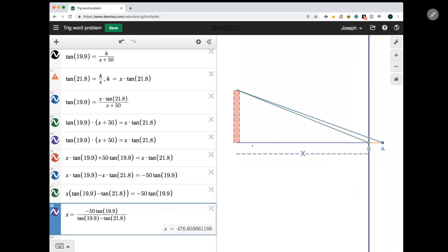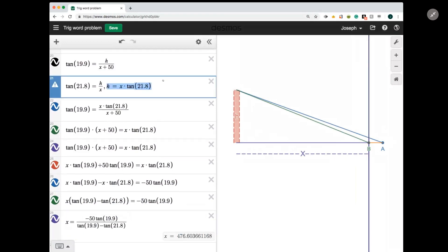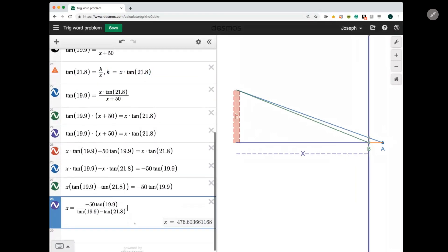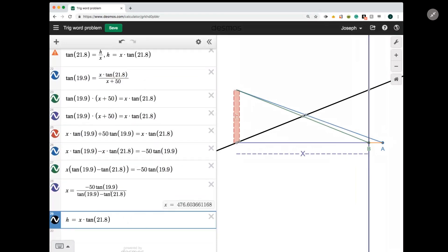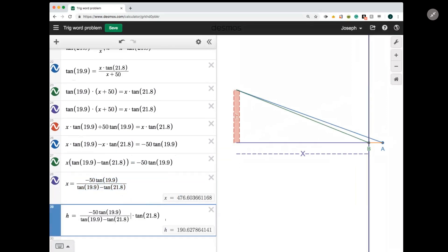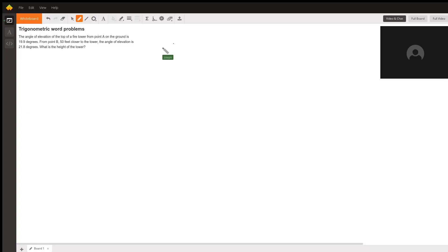Now we're not finished with the problem yet. What we've solved for here is x. And what we're after is h. However, we're very close. So what we know is that h is equal to this value x times the tangent of 21.8. And so I'm simply going to replace x with the value it's equal to. And now we can see that the height of the tower is 190.6 feet. And that's the solution to our problem.